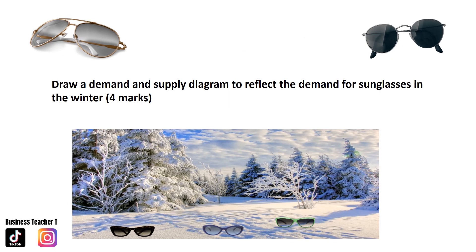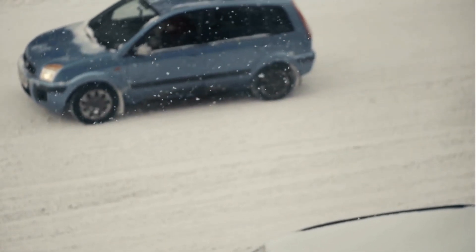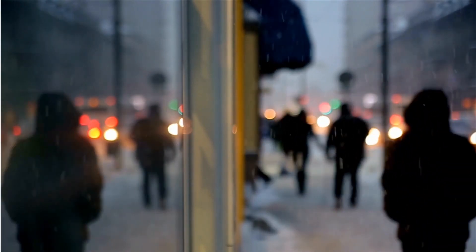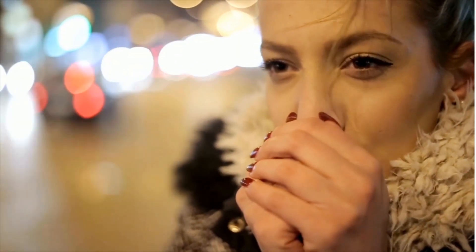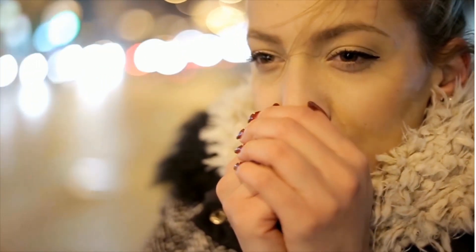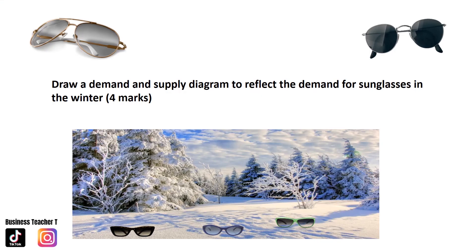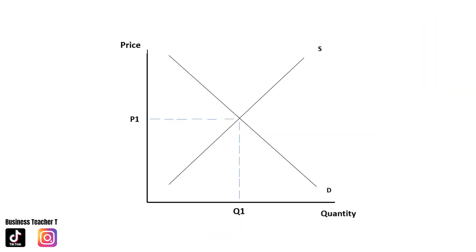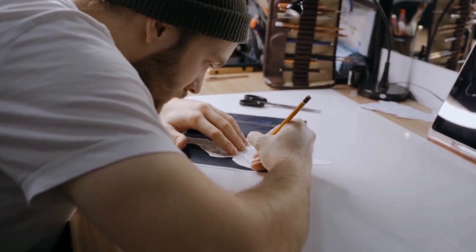Back to the question — give it some thought. Consider what would happen to the demand for sunglasses in the winter. The diagram helps us predict what will happen in the market when there is a change. The change here is that it's no longer summer, it is winter — a change in seasons. Demand for sunglasses in the winter would fall, showing a decrease in demand. Remember to start off with the X and then show a decrease in demand. You can pause and attempt the question now.